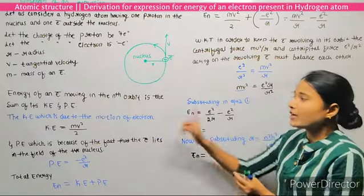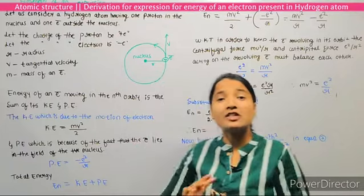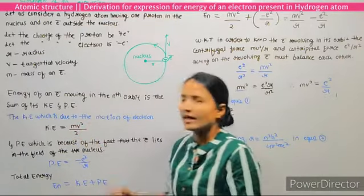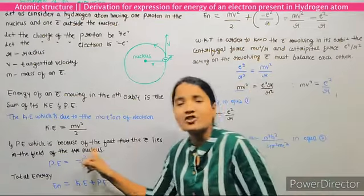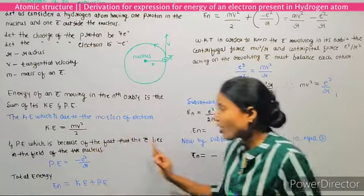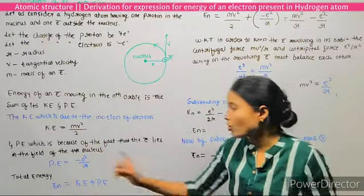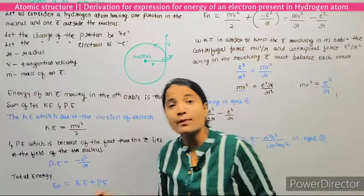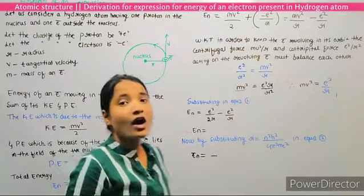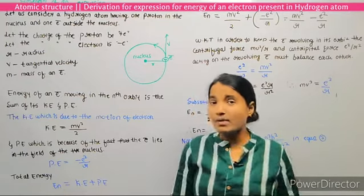The first is kinetic energy, which is due to the motion of the electron. Kinetic energy KE is equal to one-half mv squared, so KE = mv²/2. The second is potential energy, which is because of the fact that the electron lies in the field of the positive nucleus. Potential energy PE is equal to minus e squared divided by r. Total energy En equals kinetic energy plus potential energy.